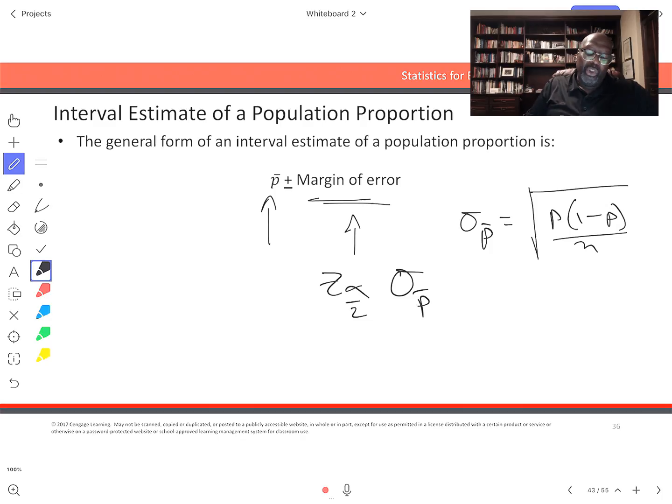But since we are looking to estimate population proportion p, we cannot have p in this formula. So we are going to have to use our estimate of sigma p bar as the square root of p bar times (1 minus p bar) over n, and that's what we're going to get.